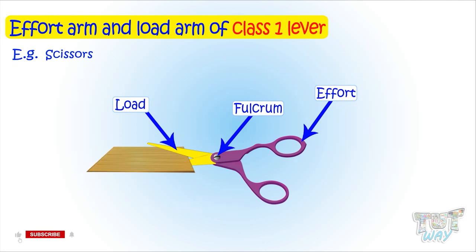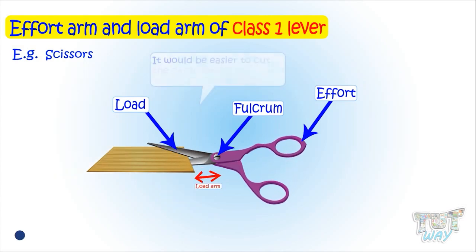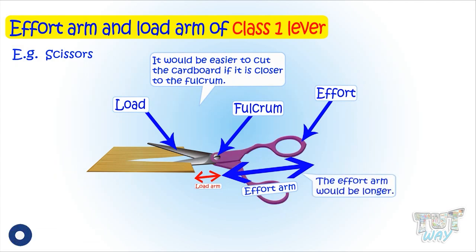The nearer the load, the more easily it will be cut as the load arm would be smaller in that case. So if you want to cut a cardboard with scissors, placing it here will be difficult. But if you place it nearer to the fulcrum, the cardboard will be cut more easily as the effort arm would be longer and load arm would be shorter.